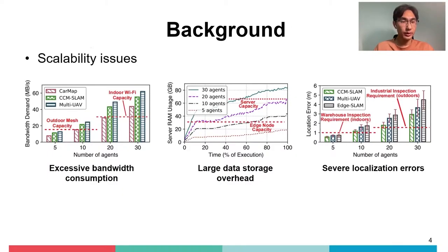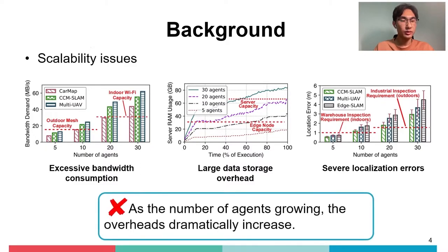However, we measured the bandwidth requirements of three state-of-the-art systems under different numbers of agents. As the number of agents grows, bandwidth consumption exceeds the capacity of indoor Wi-Fi, the large state-storage overhead becomes boundless as agents continuously explore new areas, and location errors eventually exceed requirements for both indoors and outdoors. We conclude that as more agents get involved, the overhead dramatically increases, making real-time collaborative visual SLAM on edge environments increasingly complex and facing several challenges.